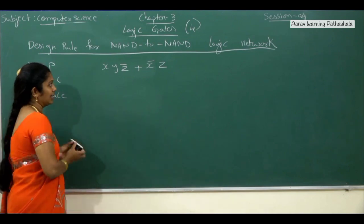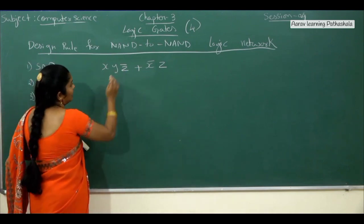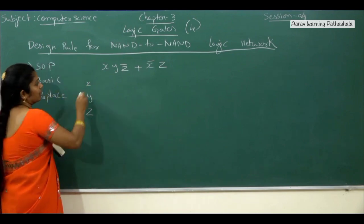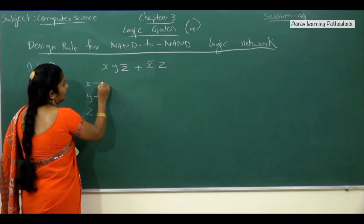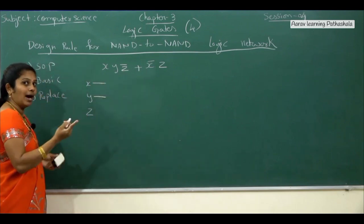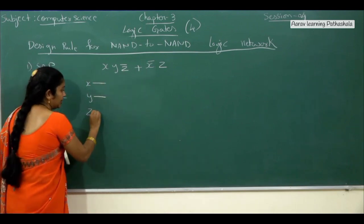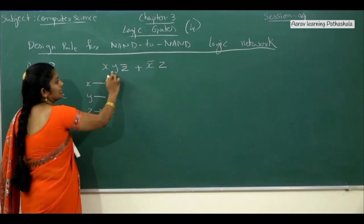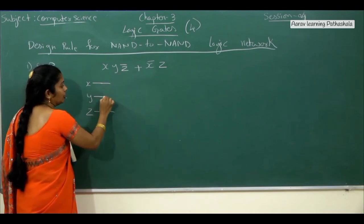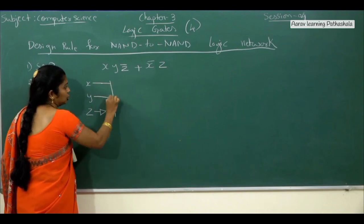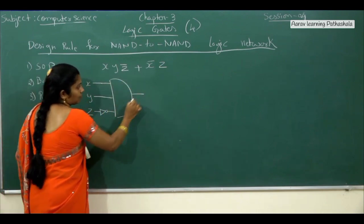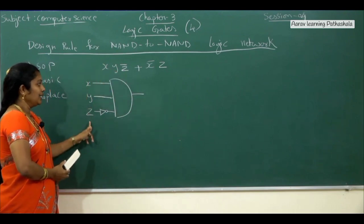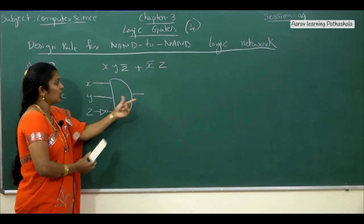The second step is to write the circuit diagram using all the basic gates. We have X, Y, and Z̄. Take X and Y, and then Z — but here we require Z̄, which is the negation, so apply the NOT operation to Z. All these things are connected with the dot operator, so use the AND gate — the D-shape. First part is completed: the output is X Y Z̄.